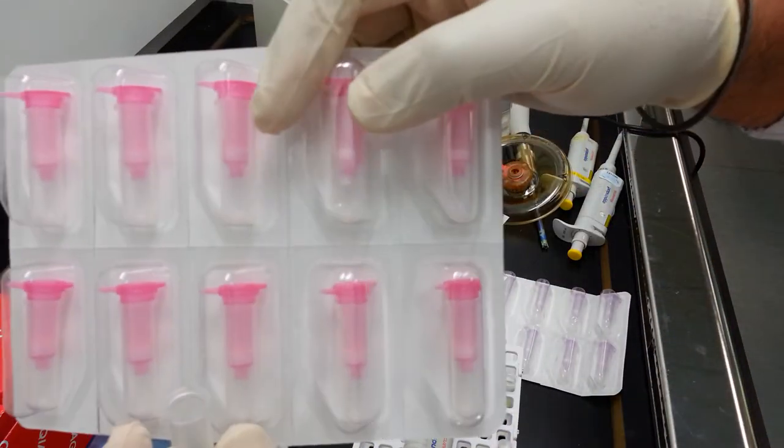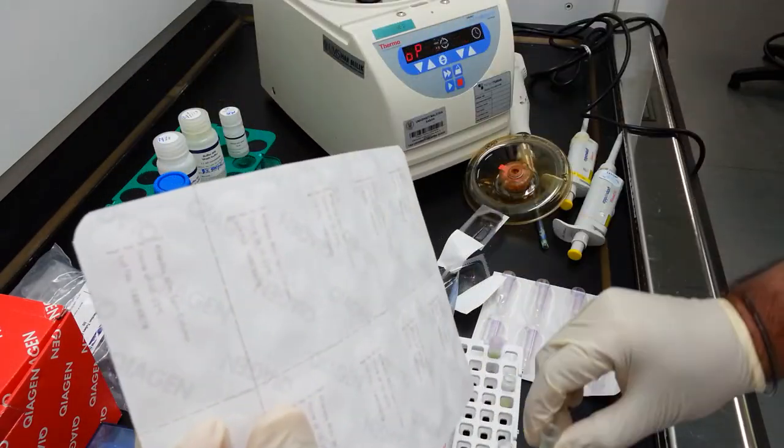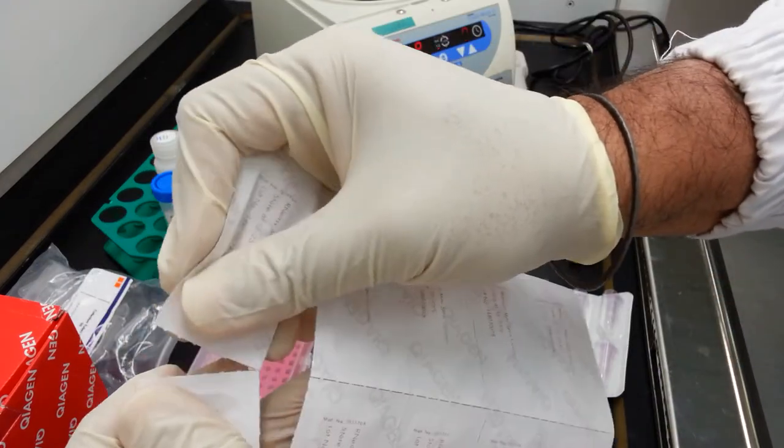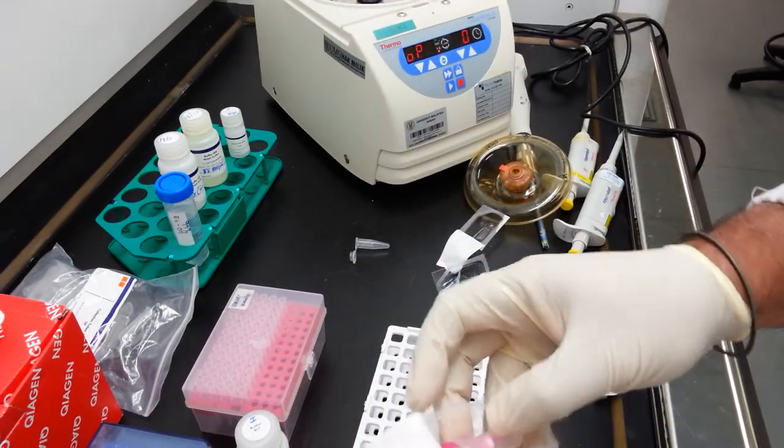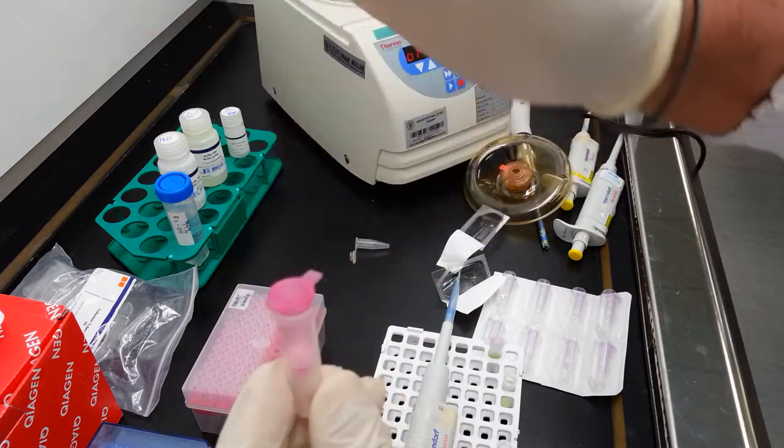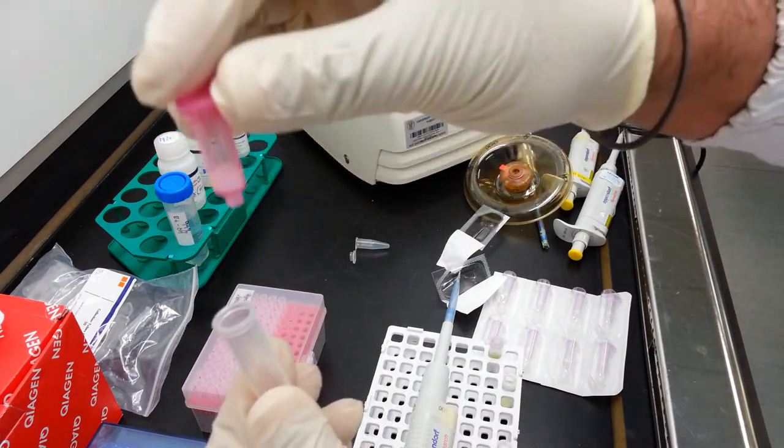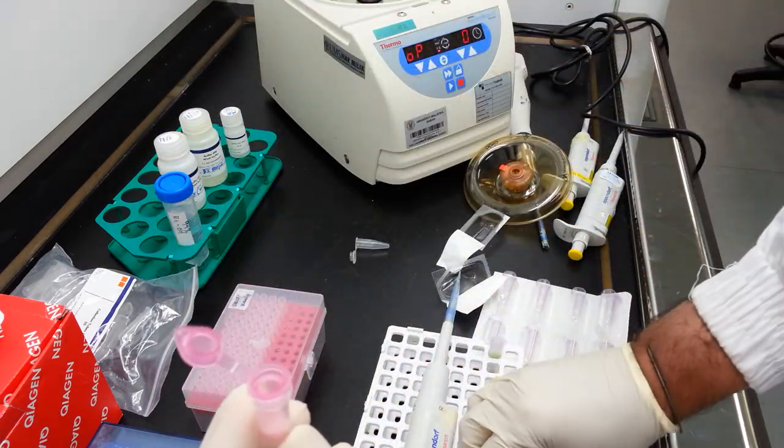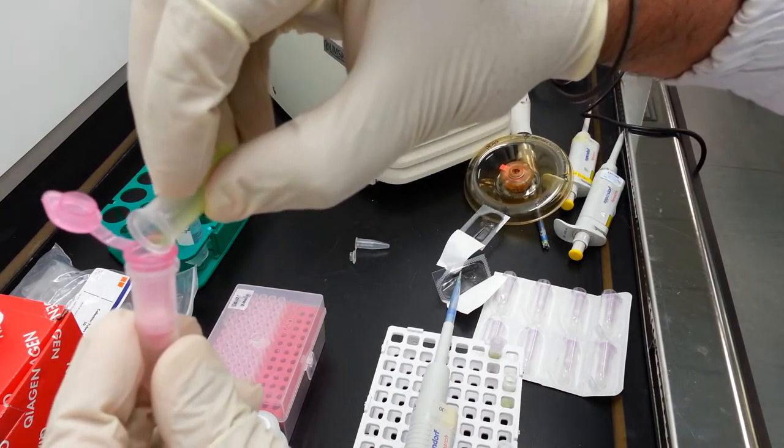Now the RNAeasy kit is equipped with this pink column, which is called a RNAeasy mini spin column. This column consists of two parts. The lower part is the collection tube. The upper part is the membrane containing element. Transfer this mixture into the collection tube.